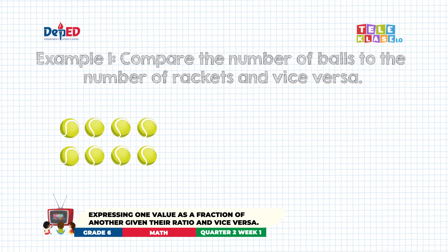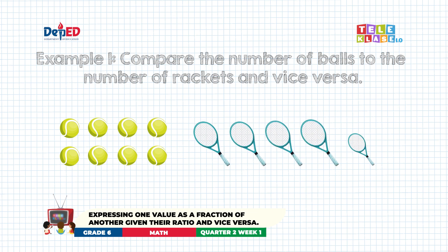Example number one: compare the number of balls to the number of rockets and vice versa. The number of balls should be counted first before the number of rockets, since the balls were written first in the given comparison. Now, let us count the number of balls, then the number of rockets.